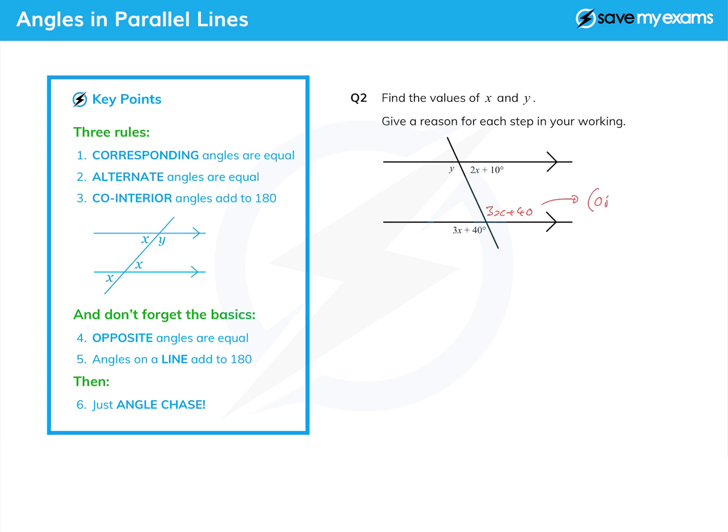And now I can see that I've got a pair of co-interior angles, or as we used to call them, C angles. So this angle here and this angle here must add up to 180. So I'll write that down: 3x plus 40 plus 2x plus 10 equals 180.